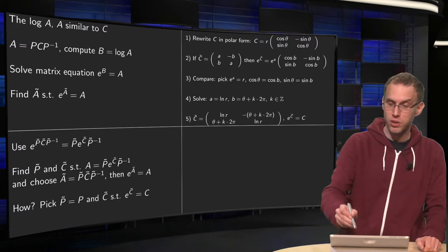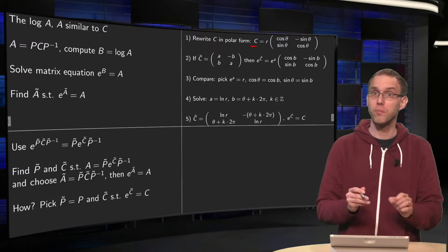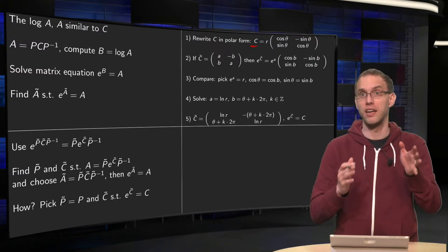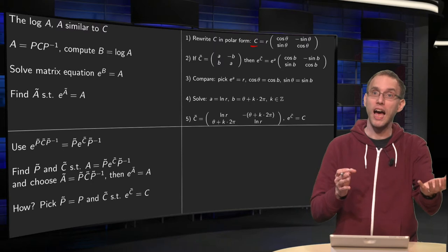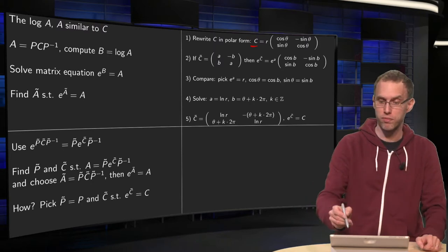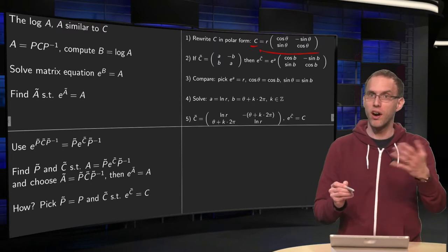So first you write your C matrix in polar form, so the one you have. You have your A equals PCP inverse, so you have your C, and you write that one in polar form like this, so you find the R and the theta.